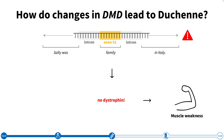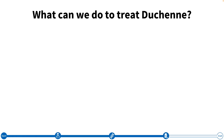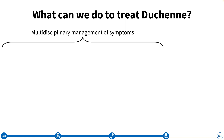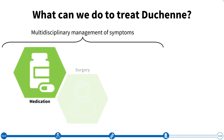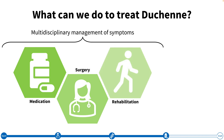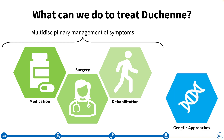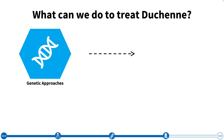Now you might be wondering: is there anything we can do to correct this mistake in the sentence and prevent dystrophin from being lost? Treatment has historically focused on managing symptoms with medication, surgery, and rehabilitation. While these can help to manage symptoms and improve quality of life, they do not directly address the underlying DNA changes causing Duchenne. This is where genetic approaches come into the picture. Enter exon skipping antisense oligonucleotides, or ASOs for short. While they do not cure Duchenne, they can treat some of the underlying genetic causes.